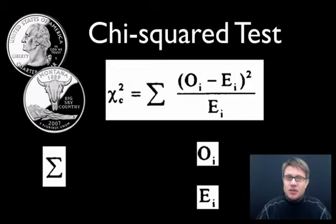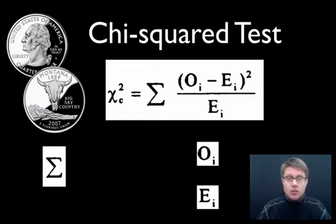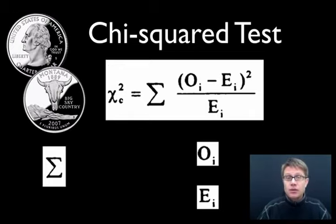Hi, it's Mr. Andersen and welcome to my podcast on the chi-squared test. Chi-squared test — if you look at the equation, lots of students get scared right away. It's really simple once you figure it out, so don't be scared away. Chi-squared test, especially in AP Biology and in science, is very important.